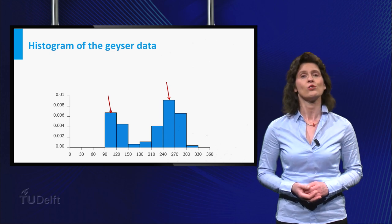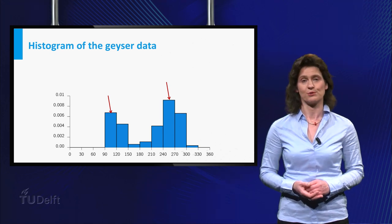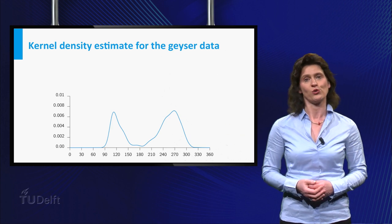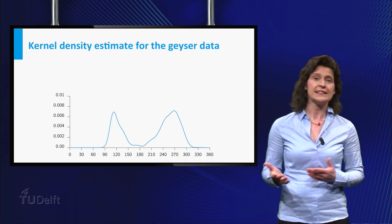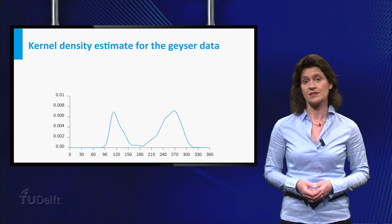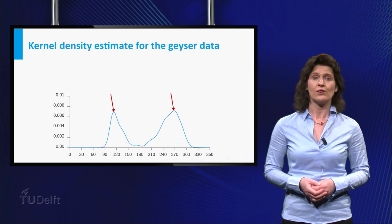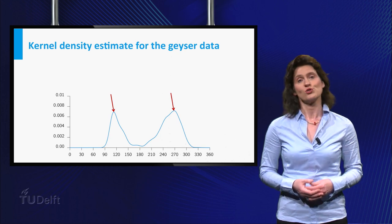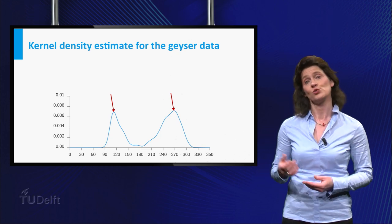That is why I am now going to introduce kernel density estimates to you. Here is the density estimate of the Old Faithful data. You immediately see the asymmetry in the dataset. You can also tell what are the typical values of the peak times: close to 120 and 270.